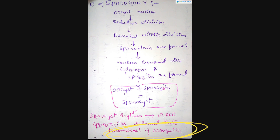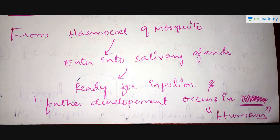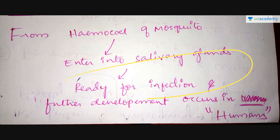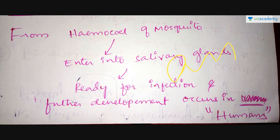After formation of the sporocyst, it gets ruptured and the approximately 10,000 sporozoites present inside are released into the hemocoel of the mosquito. From the hemocoel, these sporozoites enter the salivary glands of the mosquito. After entering the salivary glands, they get ready for infection. Further development of these sporozoites occurs in humans, which we will see in the man phase in our next video. Thank you.